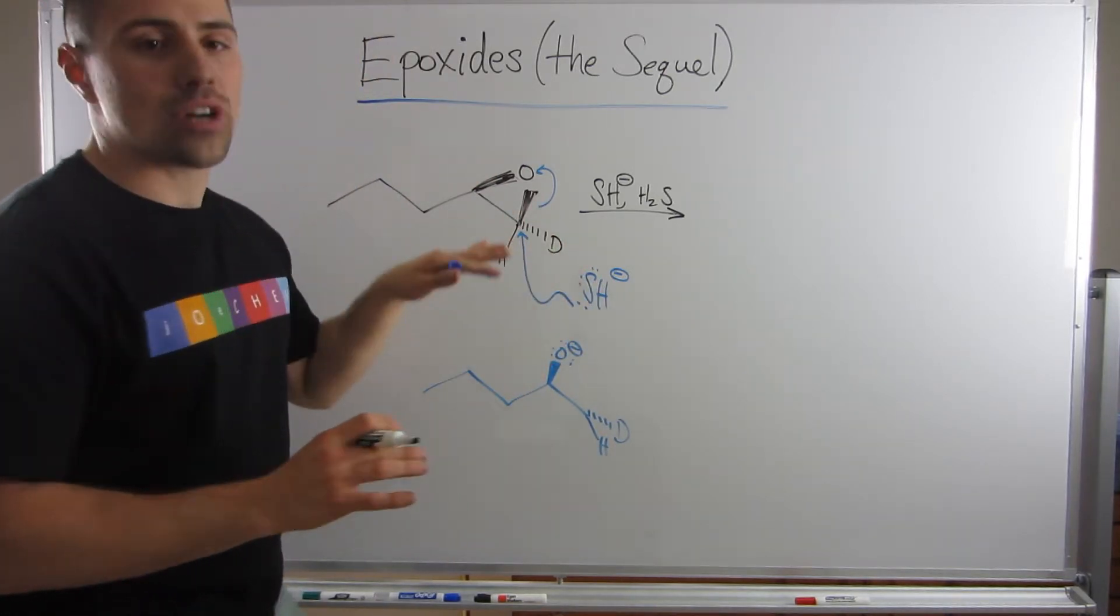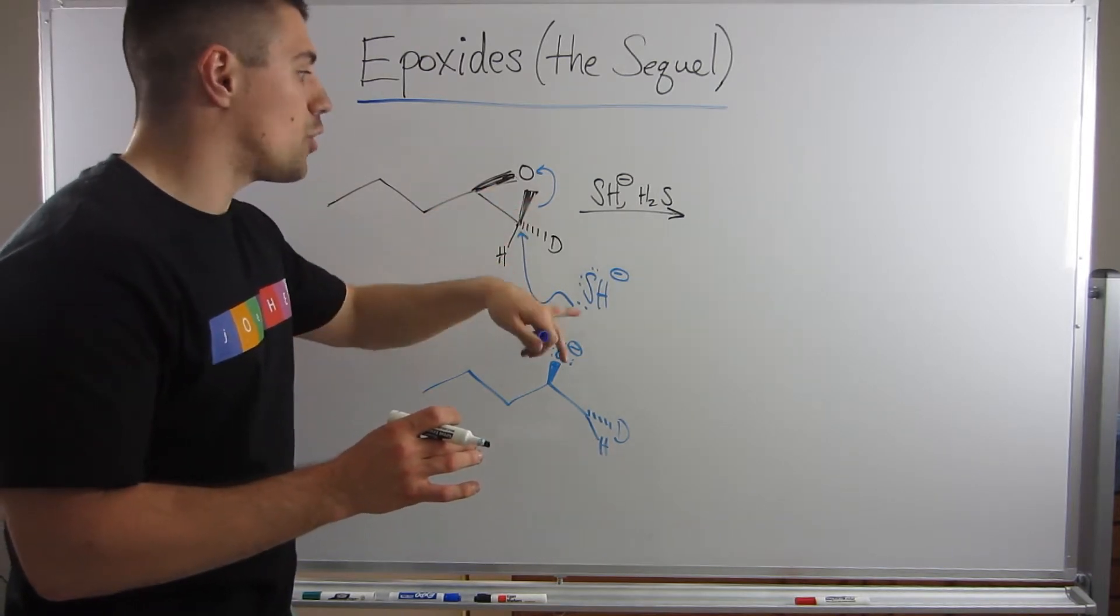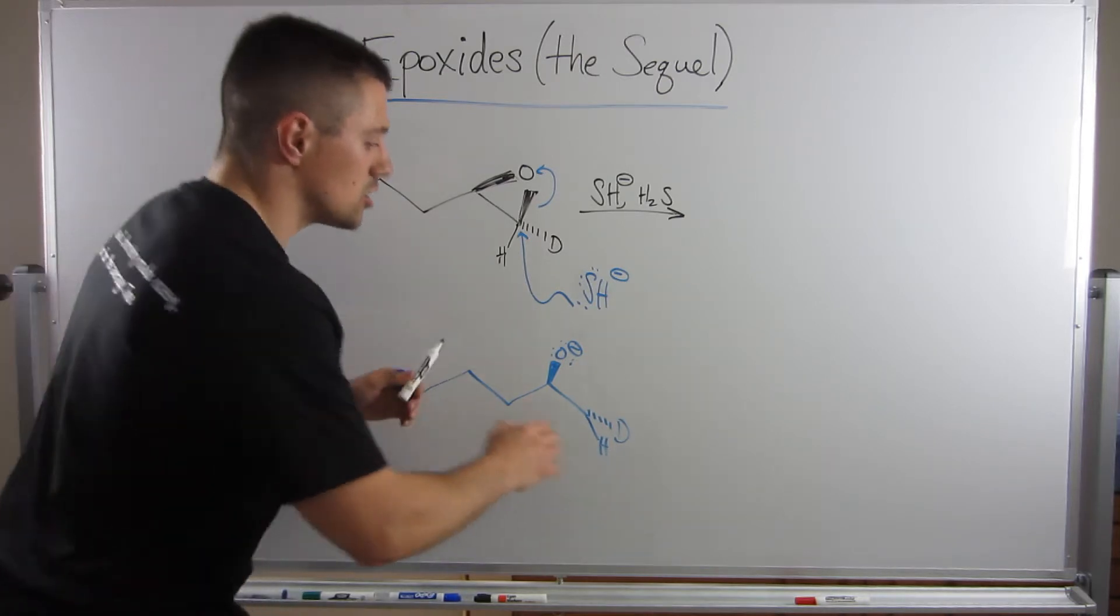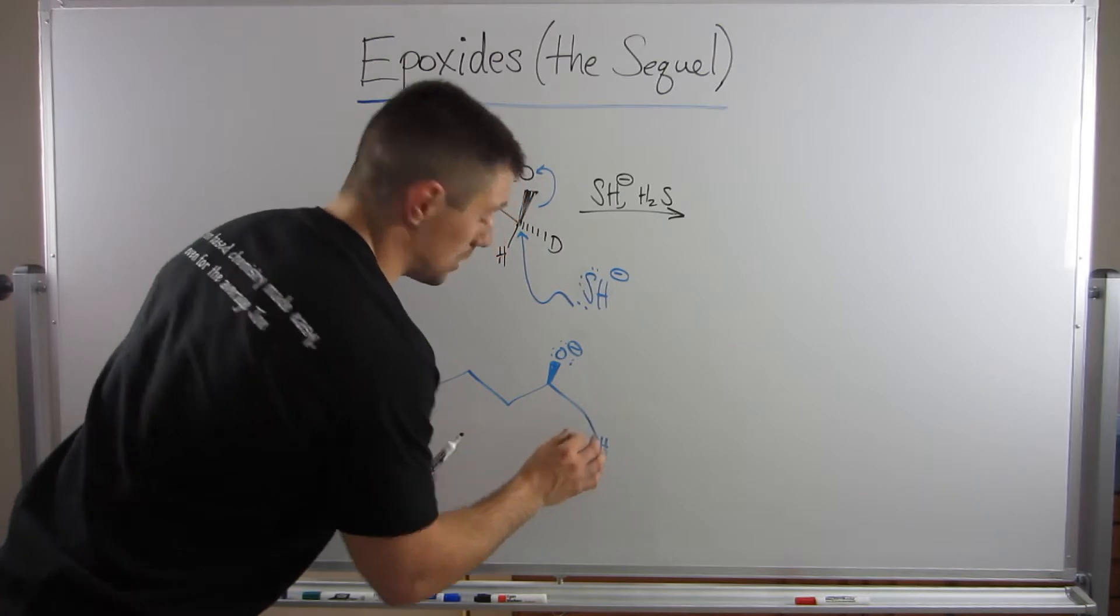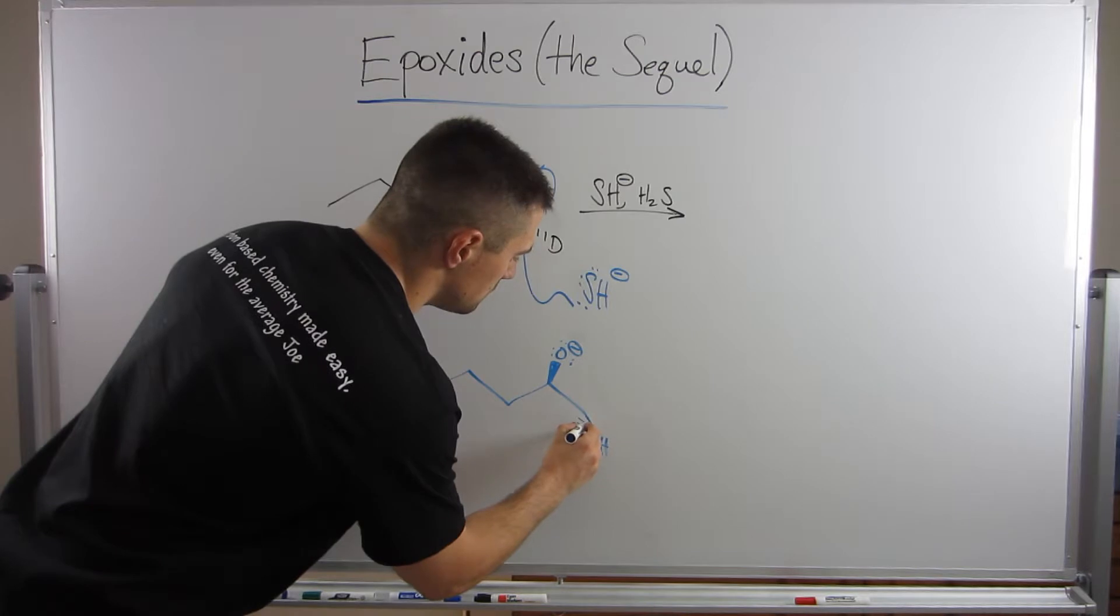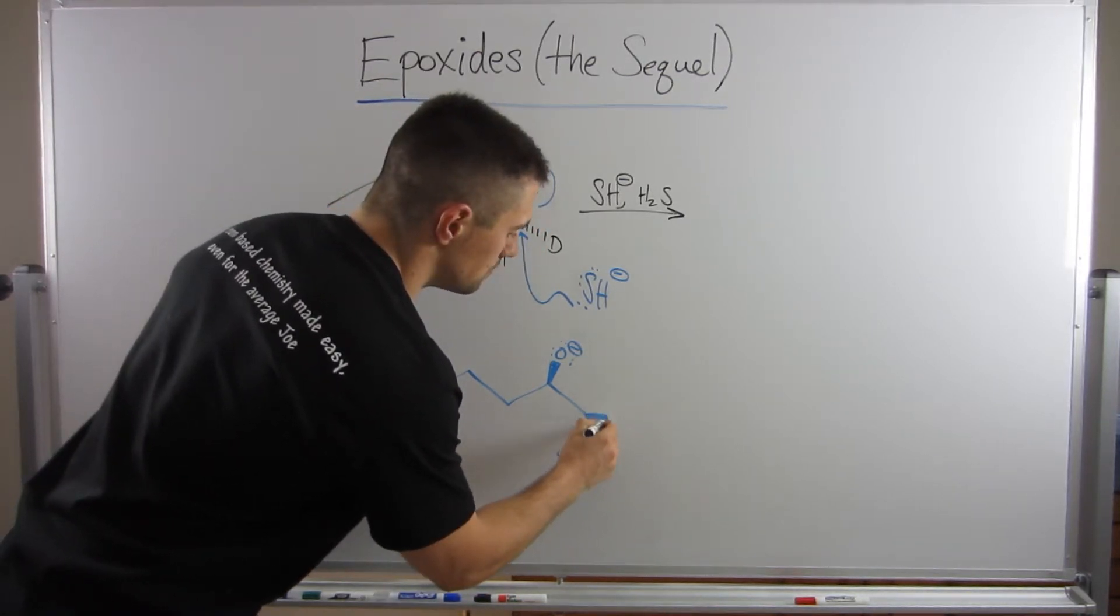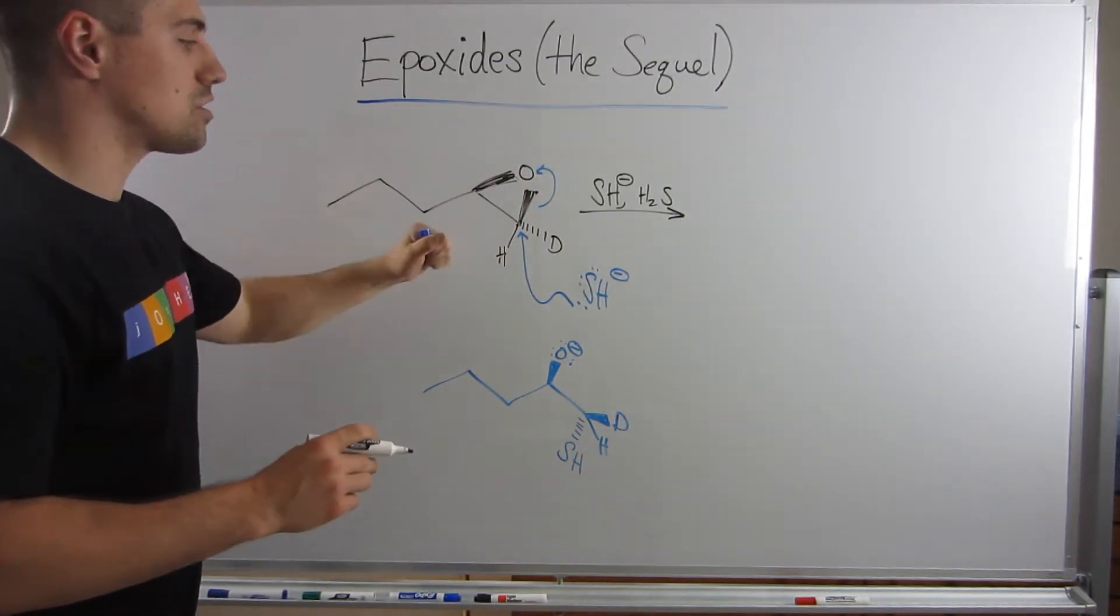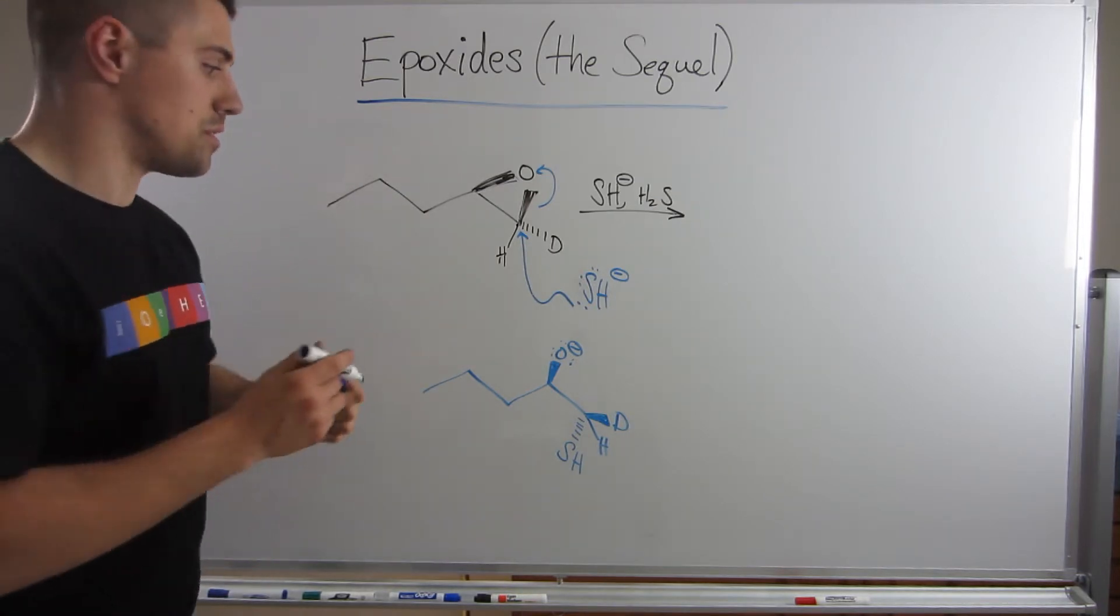Think about where the sulfur has to come from. Now, if our leaving group is the wedge, then sulfur has to come in from the underside, the dashed side and attack. So, what that's going to do, and I almost made the same mistake I was trying to tell you guys not to make, is that if sulfur is going to bond as a dash, that means the deuterium has to flip up and be a wedge. So, that's how that works. The nucleophile is going to take precedence and force its way to attack bond where it needs to go, and the other groups will rearrange as a result.